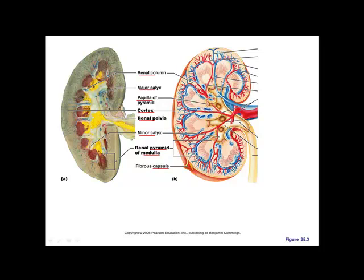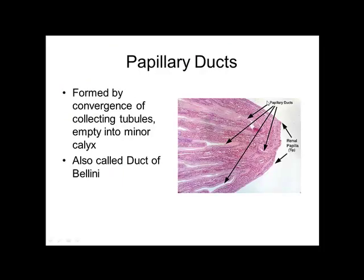We also need to follow a drop of blood — it comes into the kidney, goes out to the cortex, and then comes back. The renal papilla — 'papilla' literally means nipple — is where a bunch of collecting ducts all drain together.